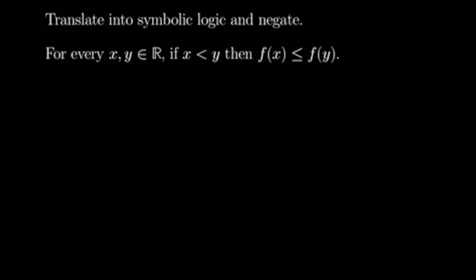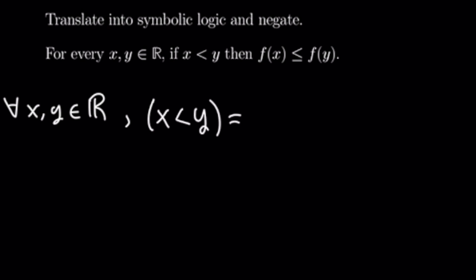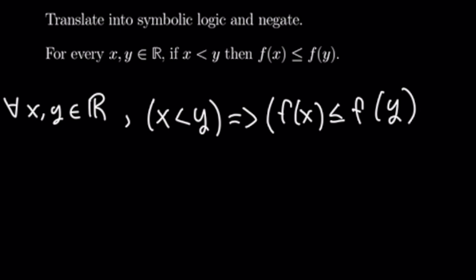This one says: for every x and y in ℝ, if x is less than y, then f of x is less than or equal to f of y. So let's translate this. We have: for all real numbers x and y, x less than y implies f of x is less than or equal to f of y.